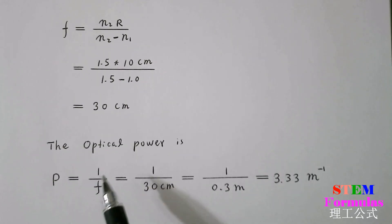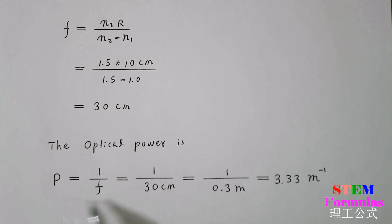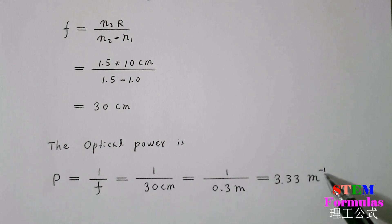The optical power is given by P equals 1 over 30 cm. And we need to change the cm to meters, so 0.3 m. So 1 over 0.3 m equal to 3.33 m to the power of minus 1.